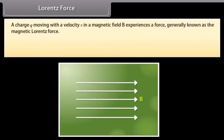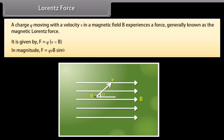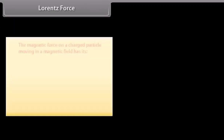Lorentz force: A charge Q moving with a velocity V in a magnetic field B experiences a force generally known as the magnetic Lorentz force. It is given by F = Q(V × B). In magnitude, F = QVB sinθ.